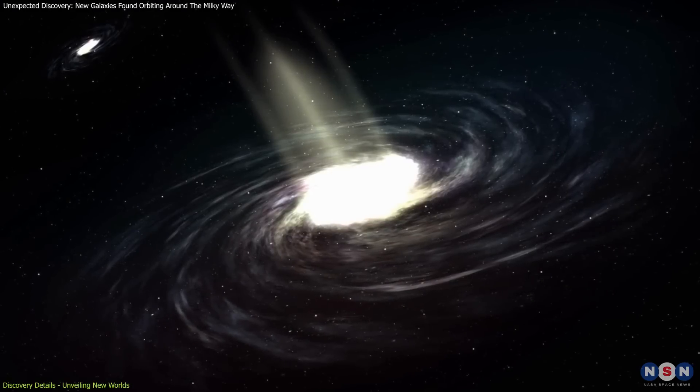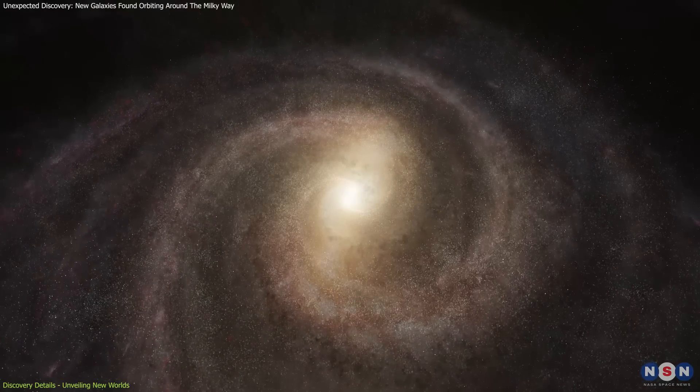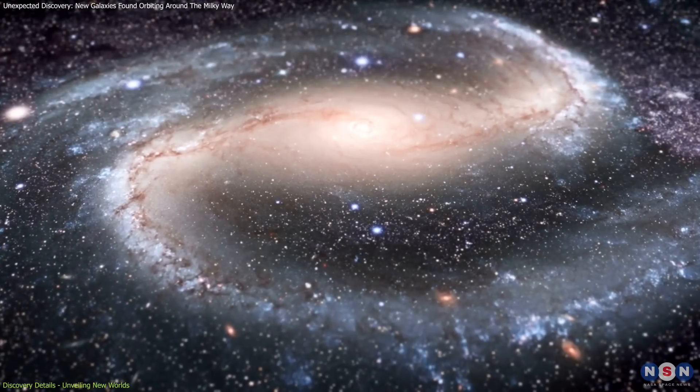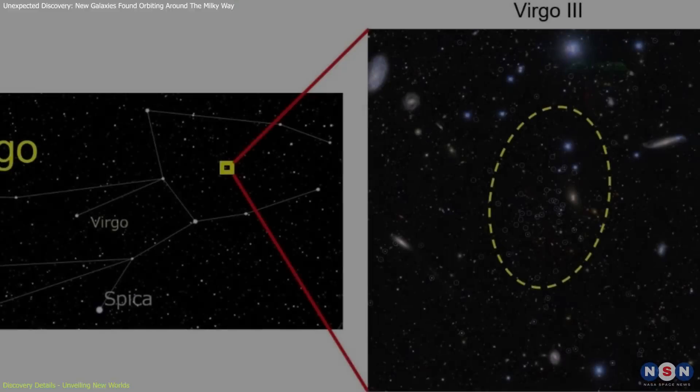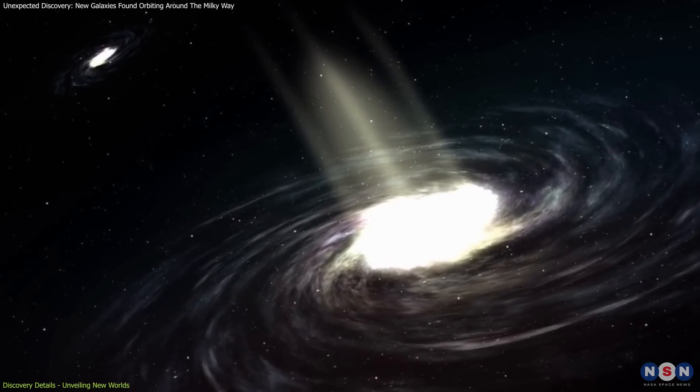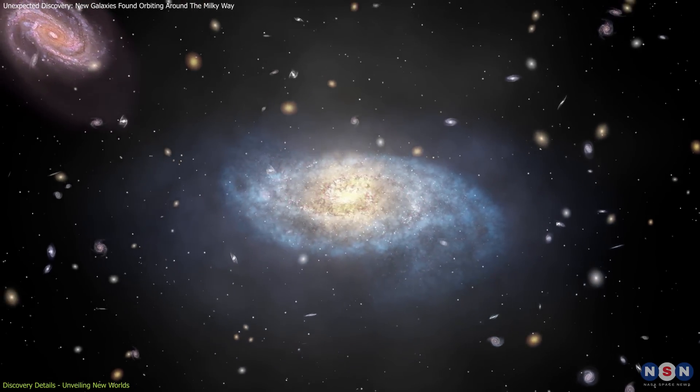Astronomers classified them as dwarf galaxies, which are crucial to our understanding of the Milky Way's formation and evolution, and also considered the building blocks of larger galaxies. By analyzing the light from these galaxies, astronomers can decipher information about their age, composition, and the history of stellar formation within them.